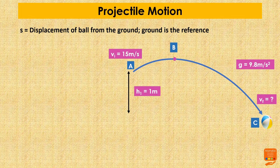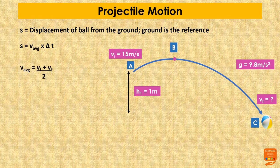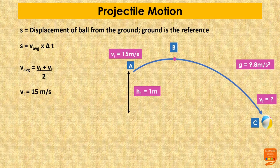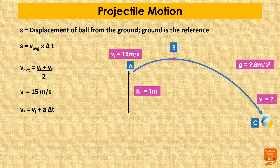From physics, displacement equals average velocity multiplied by change in time, and average velocity is initial velocity plus final velocity divided by 2. We know the initial velocity but not the final velocity, so we calculate it: final velocity equals initial velocity plus acceleration multiplied by change in time. Since the ball is thrown in the air, acceleration is acceleration due to gravity, 9.8 meters per second squared.